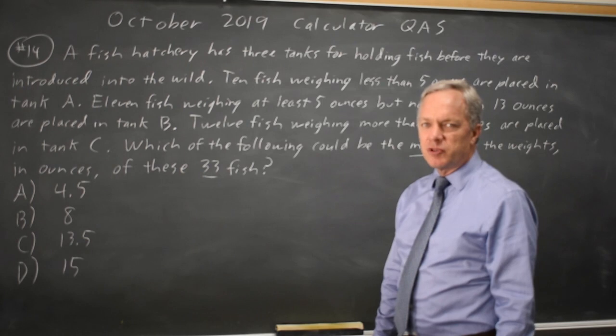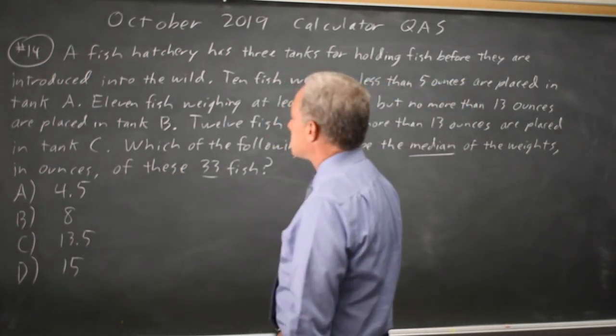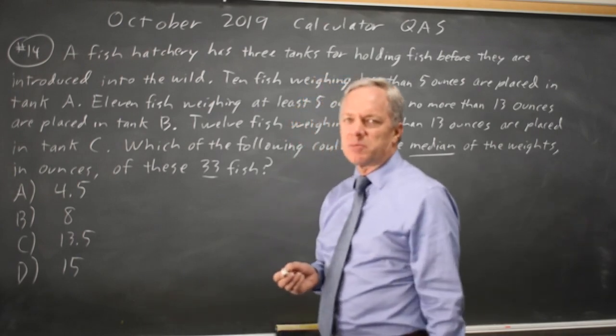So you want a weight where there are 16 fish heavier and 16 fish lighter, and then that 17th from the top, 17th from the bottom is your median.